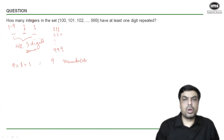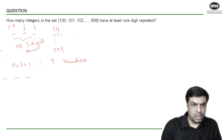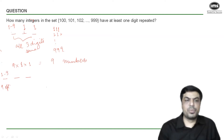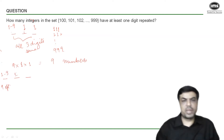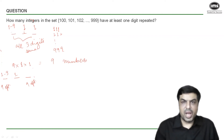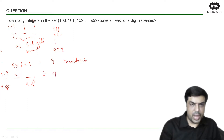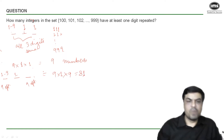The second type of qualifying numbers have exactly two digits the same and the third digit distinct. Suppose the first and second digits are the same: the first place has nine options (1 to 9), the second place has only one option (same as first), and the third place has nine options — because although I can't reuse the digit from the first place, I can now use zero. So I can form 9×1×9 = 81 such numbers where the first and second digits are the same.